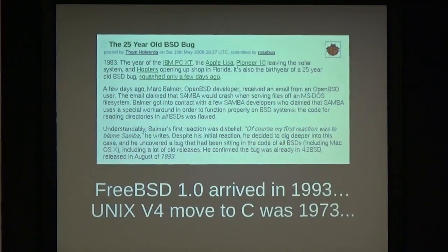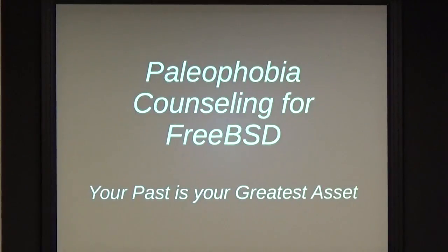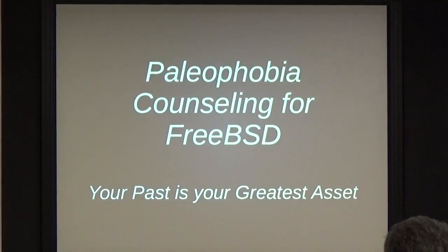So what is our scope? FreeBSD 1.0 arrived in '93, Unix moved from assembly to C in '73. It is not impossible that regressions are hiding bugs that manifest in the majority of my lifetime — which is a scary thought. So let's do some paleophobia counseling. I believe our past is our greatest asset — it's how we got here. Every release that was ever produced was the absolutely best software that team could produce at that time. And occasionally there are legal issues where you need to go back in time and find out if code contaminated your source tree from an inappropriate source.